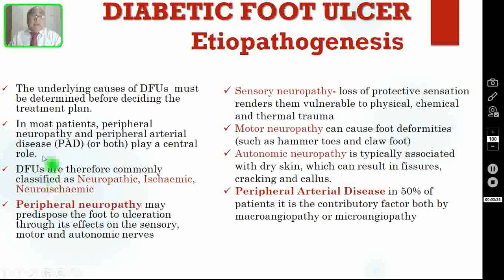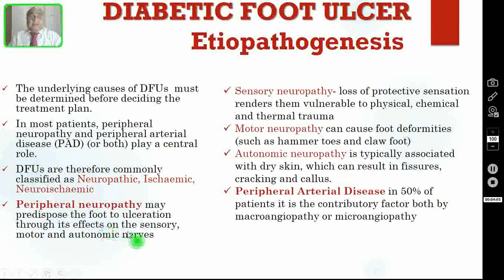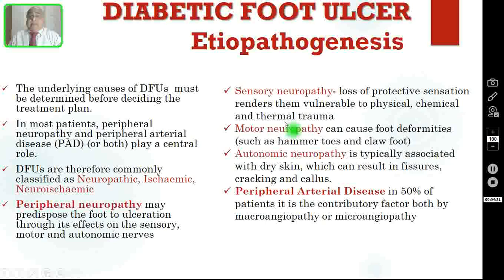Diabetic foot ulcers are therefore commonly classified as neuropathic — those having peripheral neuropathy — or ischemic — those having peripheral arterial disease — or neuro-ischemic, where they have both peripheral neuropathy as well as peripheral arterial disease. Coming to peripheral neuropathy, this may predispose the foot for ulceration through its effects on three mechanisms: sensory, motor and autonomic nerves. Sensory neuropathy causes loss of protective sensation, rendering them vulnerable to physical, chemical and thermal trauma to the foot.